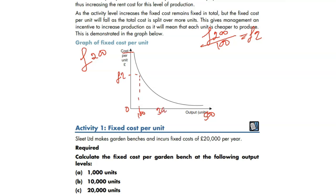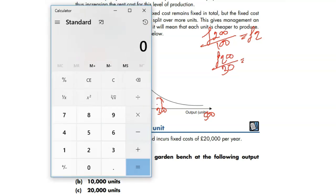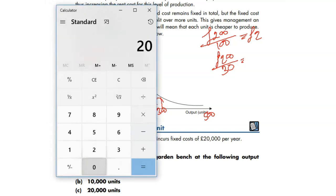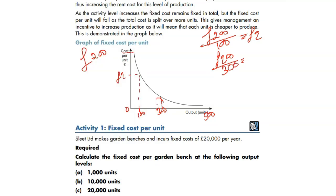Fixed cost per unit - if we produce 300, it goes down. The more you produce, the more it goes down. Maybe 0.66. Let's take the calculator. 200 divided by 300, we get 0.66 or 67. The more you produce, the more it goes down.